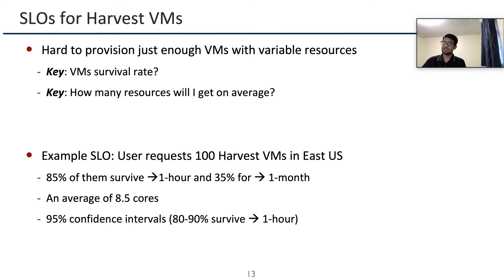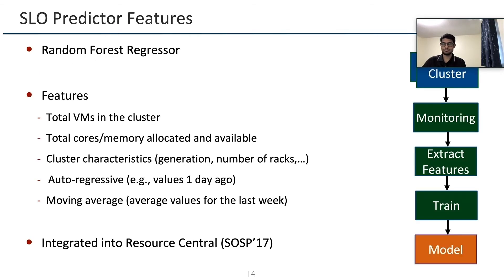If this SLO is not acceptable, users can change the number of VMs, region, or minimum size and retry. After experimenting with multiple modeling approaches, we settled on a Random Forest Regressor. Key features include total VMs in the cluster, allocation data, availability data, cluster characteristics like generation and number of racks, and our model incorporates features like autoregression and moving average from ARIMA. We train our models using the infrastructure of the Resource Central system, which is described in its SOSP paper. The figure also shows how we train the model from collecting data to training and finally exporting the model for inference.